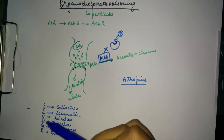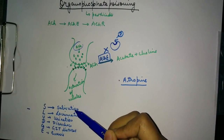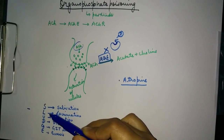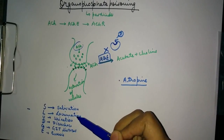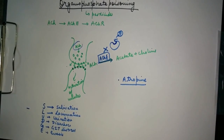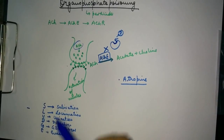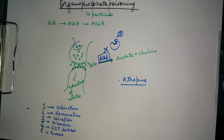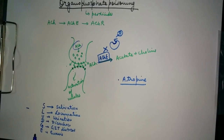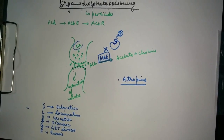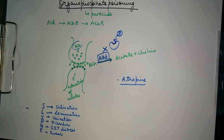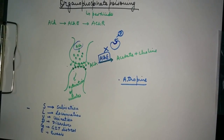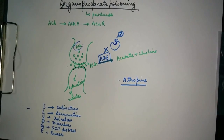There is a series of symptoms related to organophosphate poisoning described by the mnemonic SLUDGE: S for salivation, L for lacrimation (tears coming out of the eyes), U for urination or urinary incontinence, D for diarrhea, G for gastrointestinal distress, and E for emesis, which means vomiting.